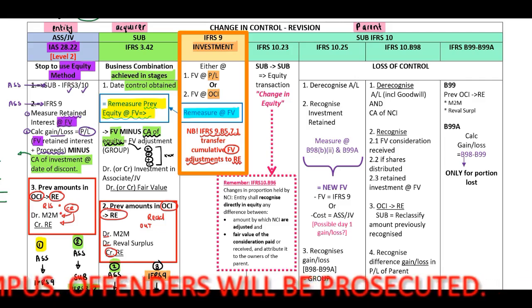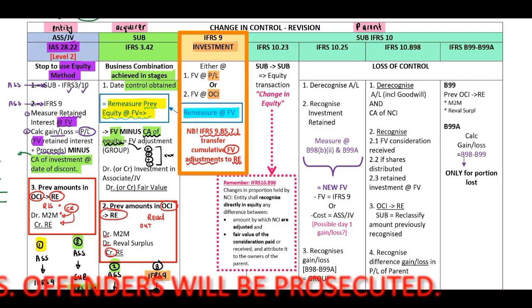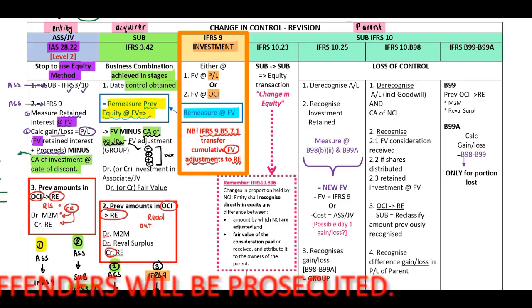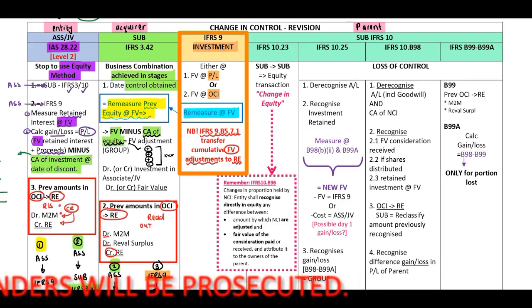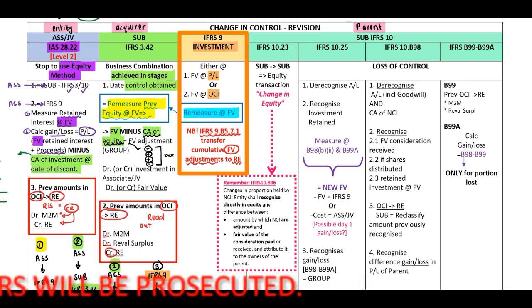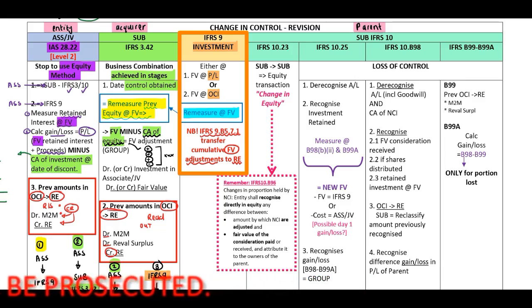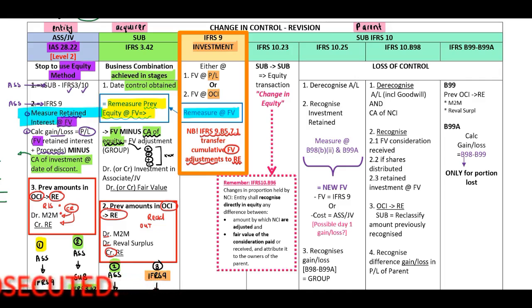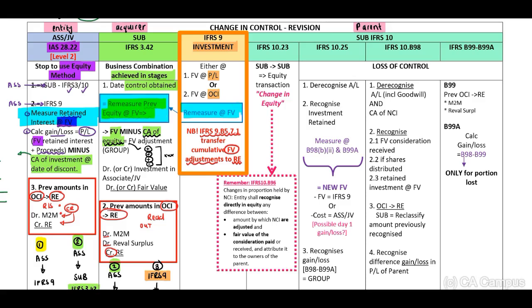If you look at your screen, you will identify that there are a few similar rules repeating themselves here. Rule number one — for our level two, left side of your screen, left column — remeasure your retained interest at fair value. Then IFRS 3 paragraph 42: remeasure your previously held equity at fair value. Then IFRS 9: remeasure at fair value.